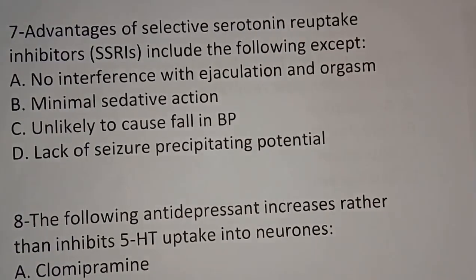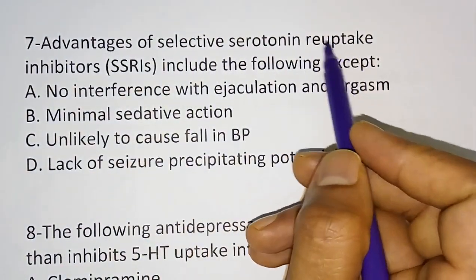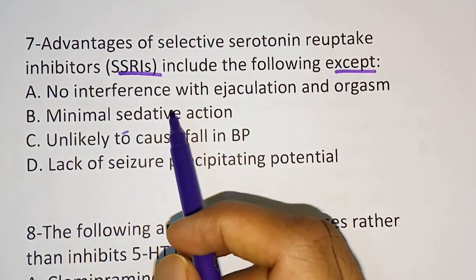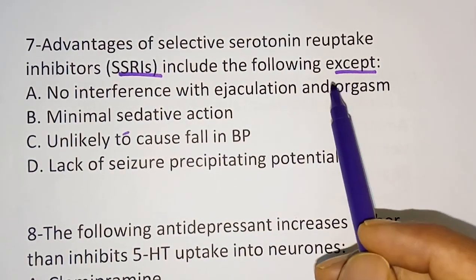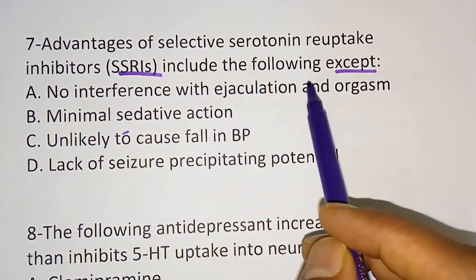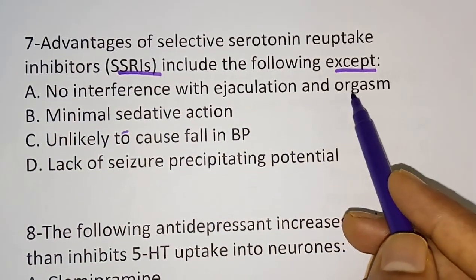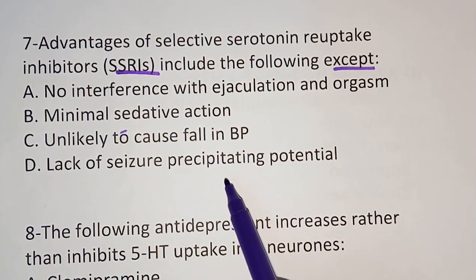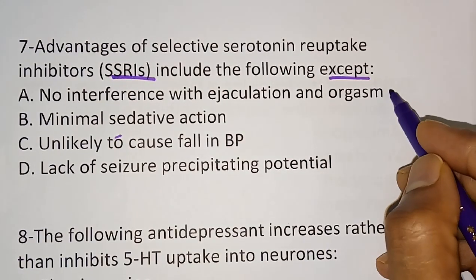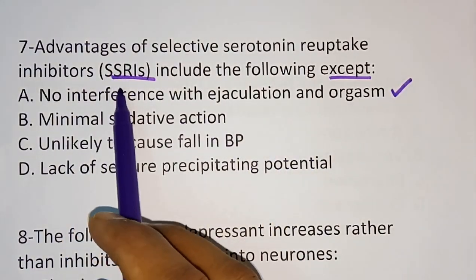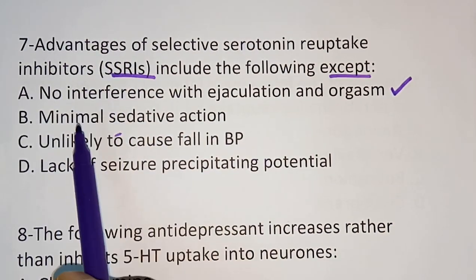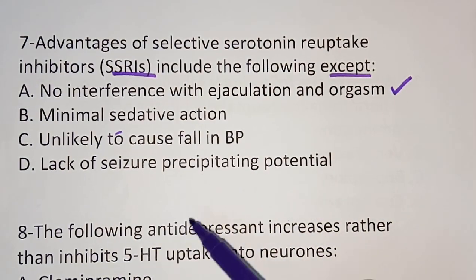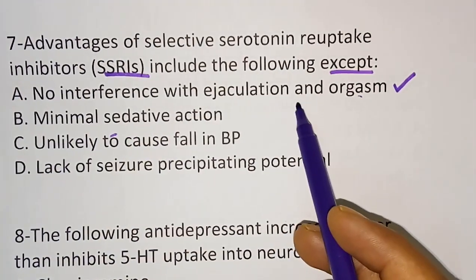Question number seven: advantages of selective serotonin reuptake inhibitor (SSRI) include the following, except — which of the following is NOT an advantage? Option A: no interference with ejaculation and orgasm. Option B: minimal sedative action. Option C: unlikely to cause fall in BP. Option D: lack of seizure-precipitating potential. The correct answer is option A — SSRI actually interferes with ejaculation as well as orgasm. SSRIs do have minimal sedative action, are unlikely to cause fall in BP, and lack seizure-precipitating potential.